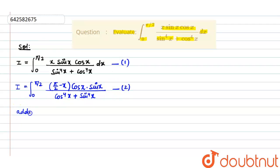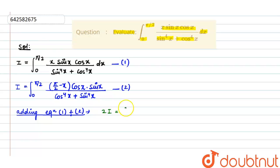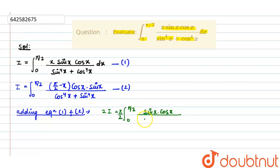Now we add equation 1 and equation 2. After adding, we get 2I on the left-hand side. The x terms cancel out, and taking π/2 outside, the numerator has only sin(x)·cos(x) remaining, while the denominator is sin⁴(x) + cos⁴(x) dx.